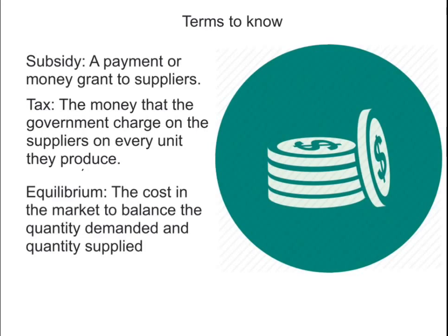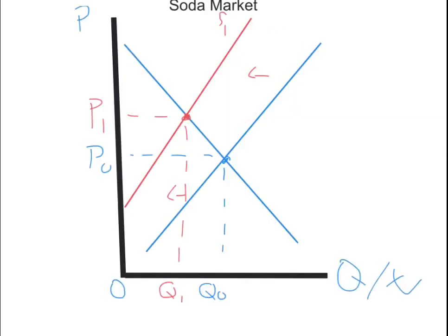Let's see how the government affects the soda market in both supply and demand when they put a tax on. Looking at the original blue demand curve sloping downward and the original supply curve S0, these represent the market's original state before the government put taxes on. Suppose that at price P0 per can of soda, suppliers sell Q0 cans per month.